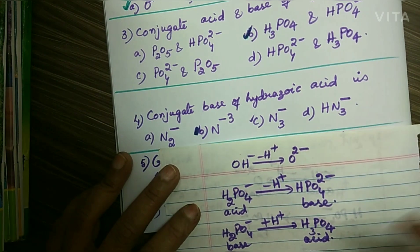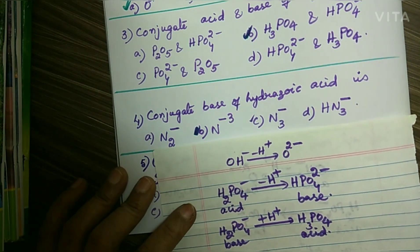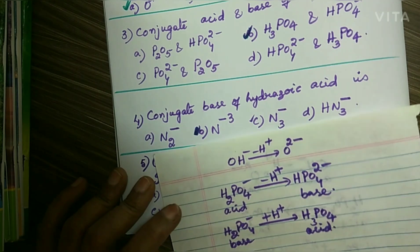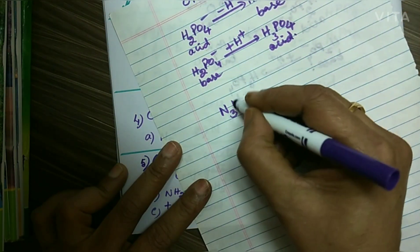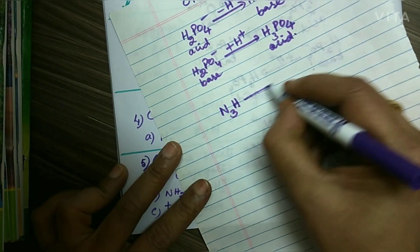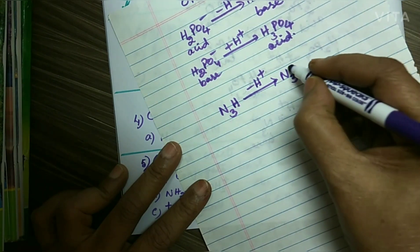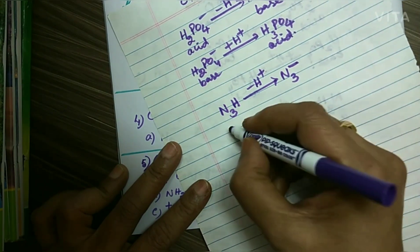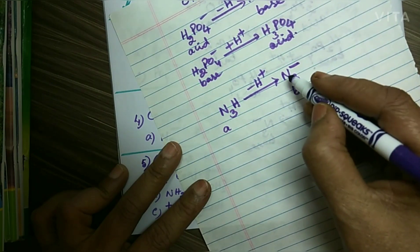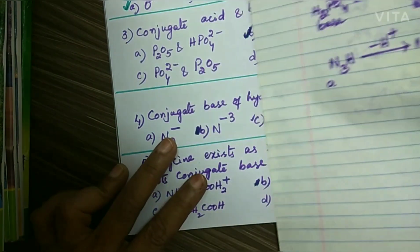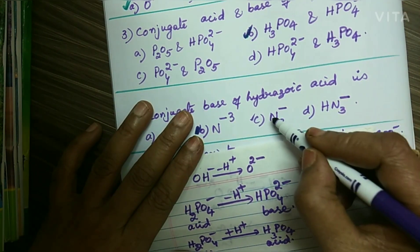Next question: what is the conjugate base of HN3 (hydrazoic acid)? It is an acid, so it loses a proton to form N3⁻ ion. The conjugate base of hydrazoic acid is N3⁻ ion, so option C is the answer.